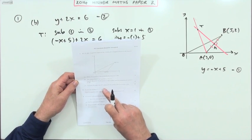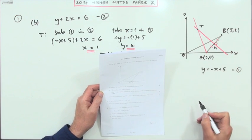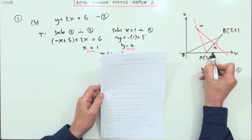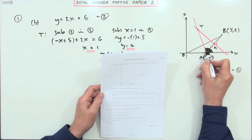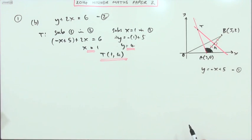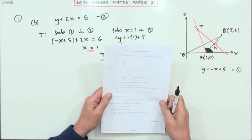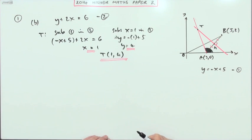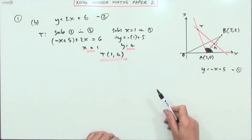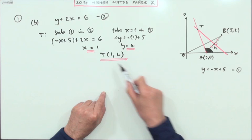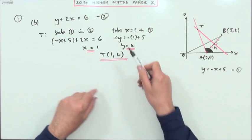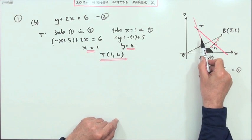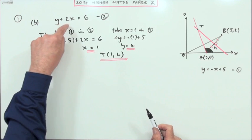Part C says what's the angle that AT makes with the positive direction of the x-axis? So that's this angle in here. This must be something to do with the connection between gradient and tangent of the angle, but I don't need to work out the gradient of the line AT.